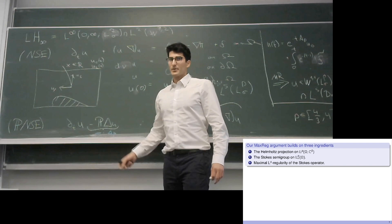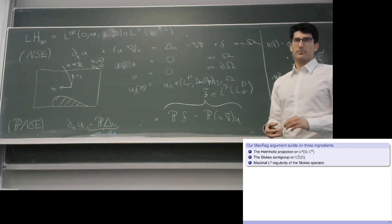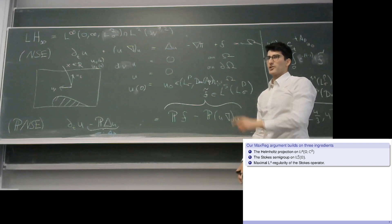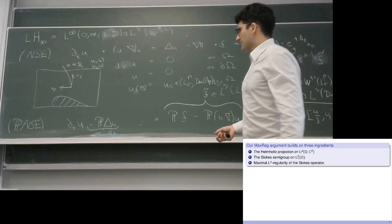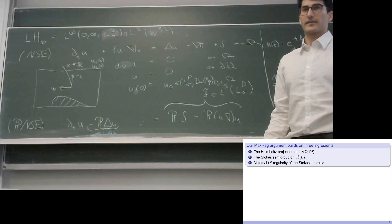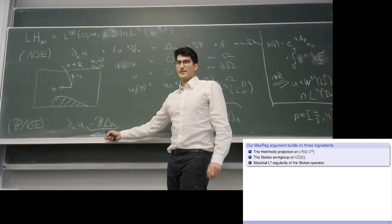Our maximal regularity argument builds on three ingredients. First, we need a Helmholtz projection — and once I have done this projection, how can I reconstruct the pressure? One way is via the Helmholtz projection. Second, I need to show there is a Stokes semigroup, ideally an analytic semigroup. Third, I also need to show that this operator has maximal regularity so the whole argument carries through.